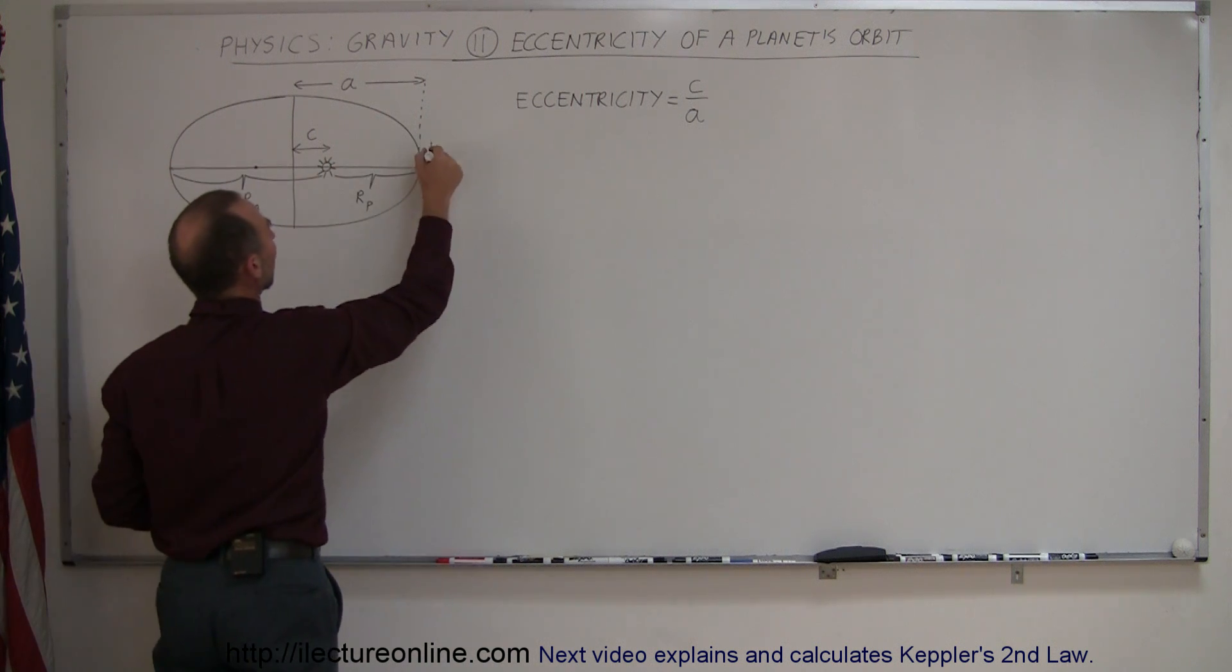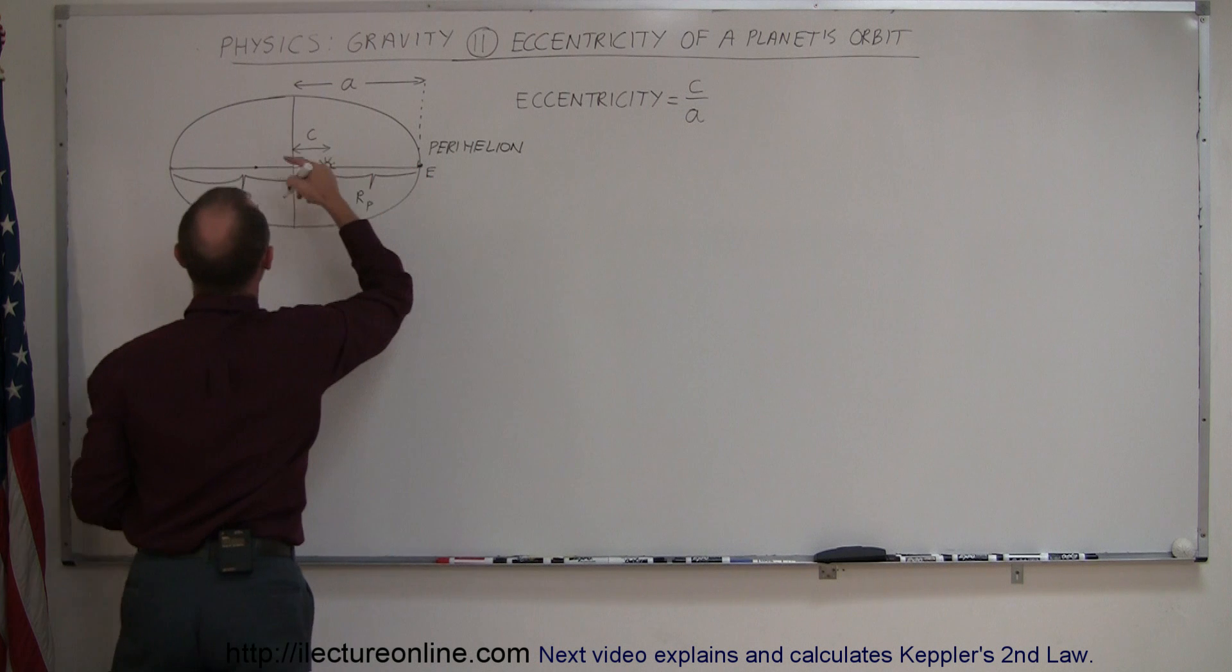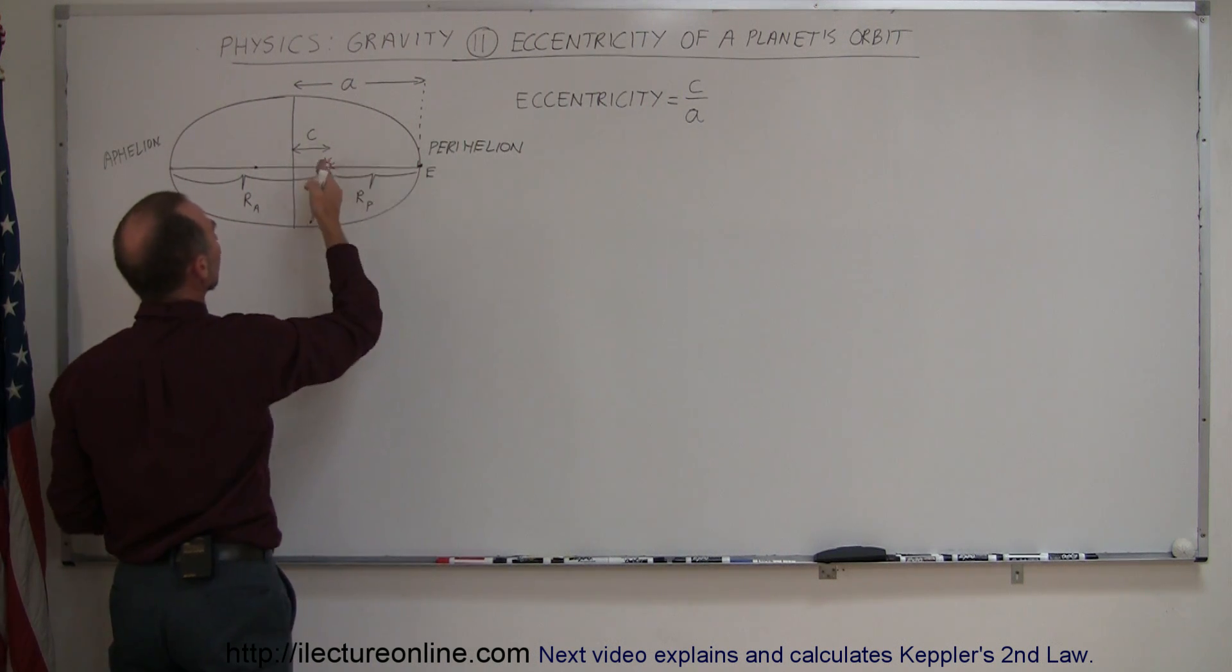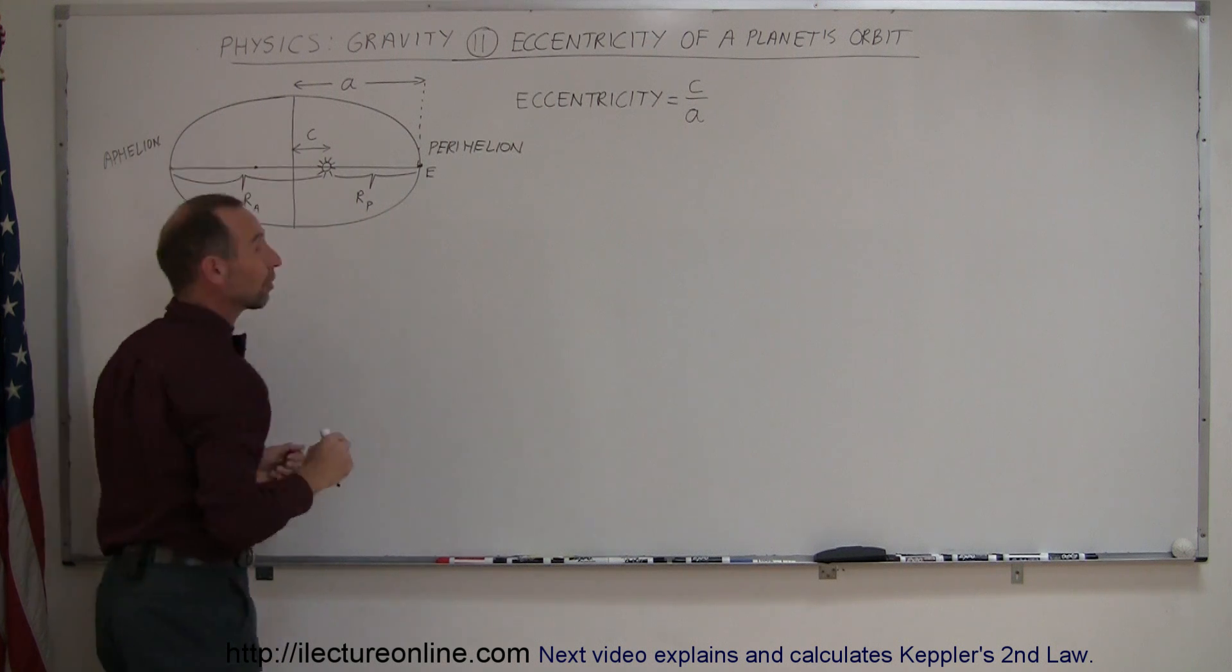This point right here is called perihelion, and this point right here is called aphelion. When the earth is at perihelion, it's close to the sun. When it's aphelion, it's farthest away from the sun.